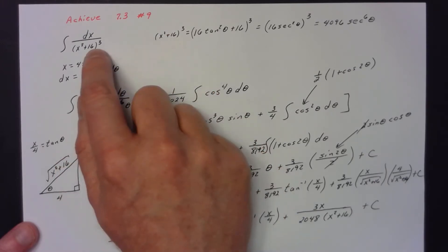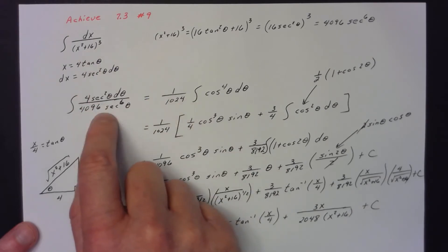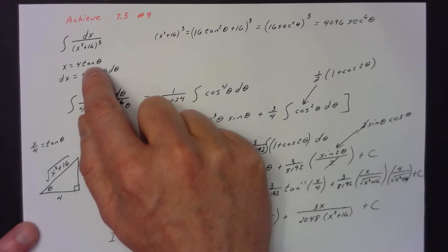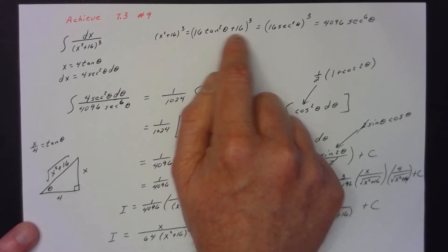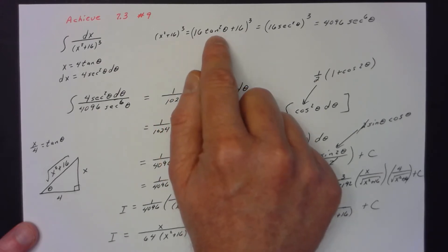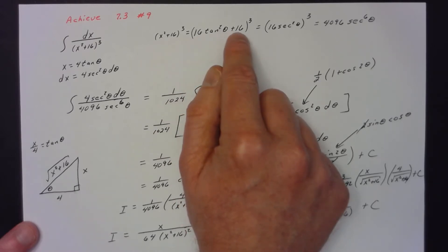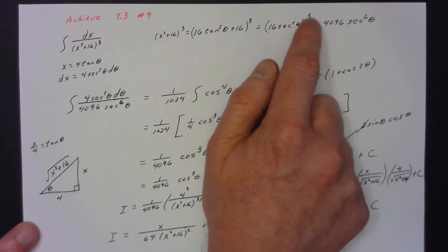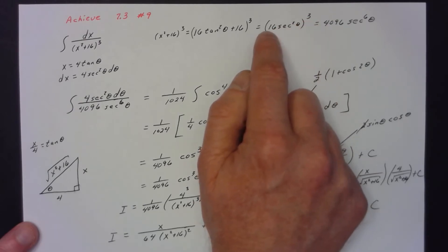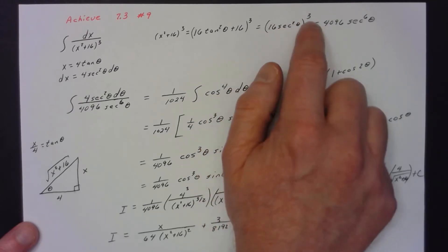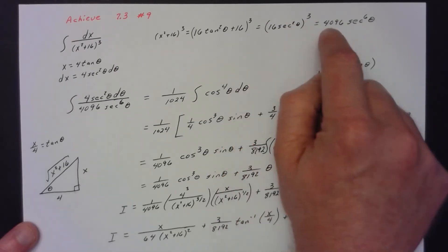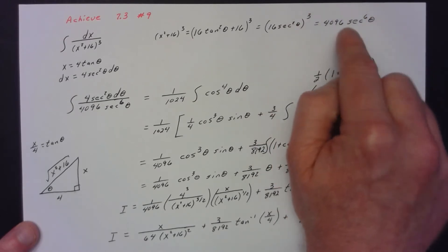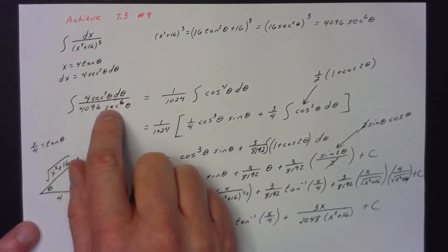Now I go ahead and show what everything inside the integrand is. (x² + 16)³ becomes (16 tan² θ + 16)³. The inside factors to 16(tan² θ + 1), and tan² θ + 1 equals sec² θ, so I have (16 sec² θ)³. I went to my calculator — 16³ is 4096, and sec² raised to the third is sec⁶. So the denominator is 4096 sec⁶ θ.